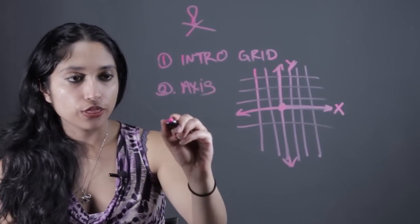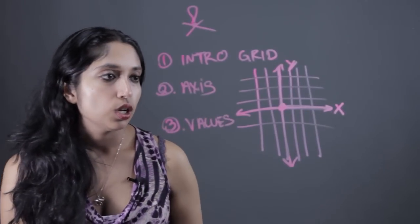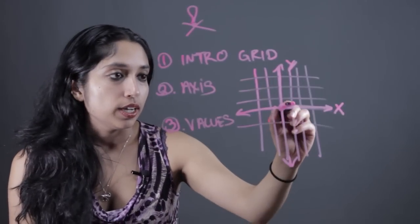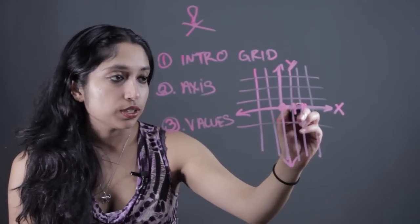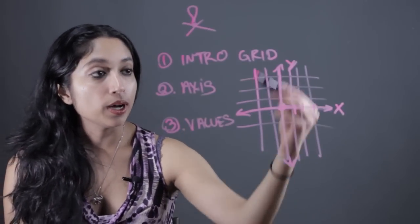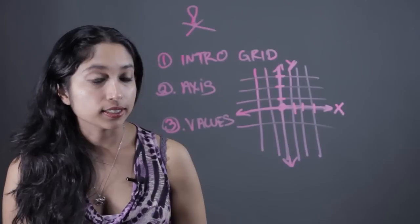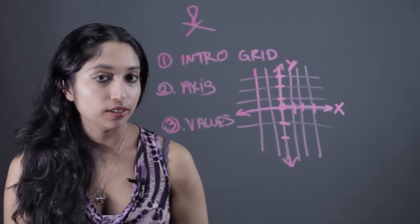That's actually the third thing we're going to do: introduce values. For example, everything to the right of the origin is going to be positive on the x-axis, and everything above the origin is going to be positive on the y-axis. Everything below is going to be negative.